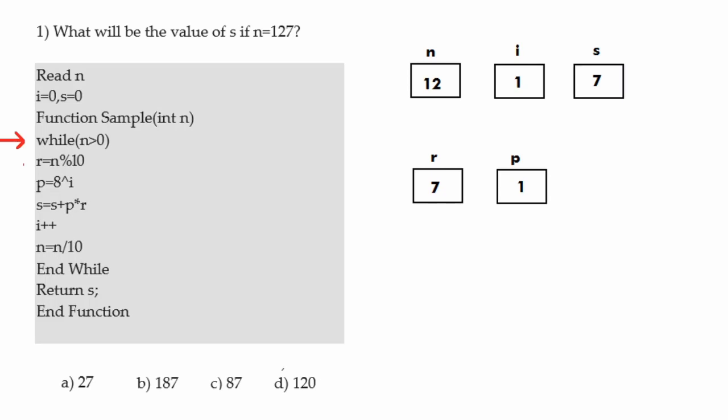We again test the condition n greater than 0. Now n is 12, so we proceed. r equals n modulo 10, so r becomes 2. Then p equals 8 to the power i. This time i equals 1, so 8 to the power 1 gives us 8, meaning p becomes 8. In the next statement s equals s plus p times r: that is 7 plus 8 times 2, so s becomes 23.